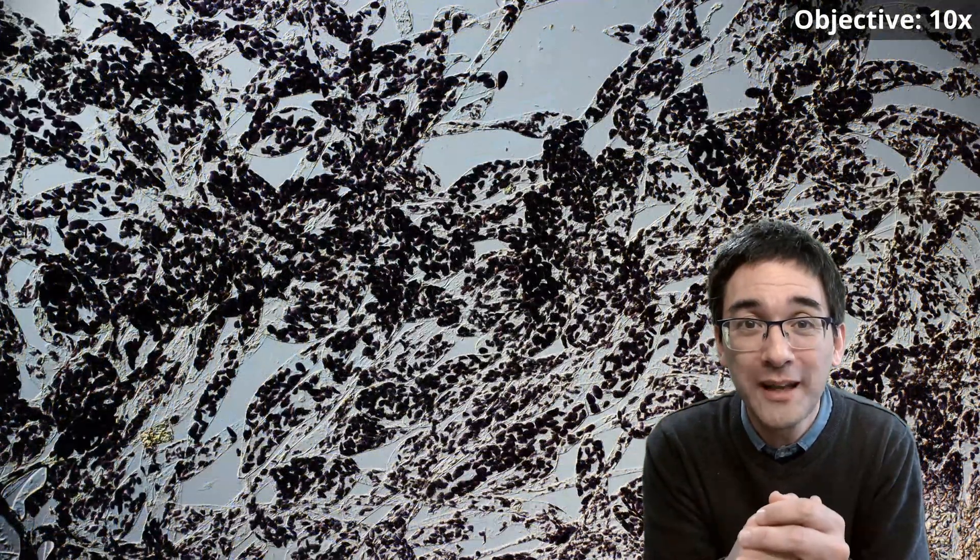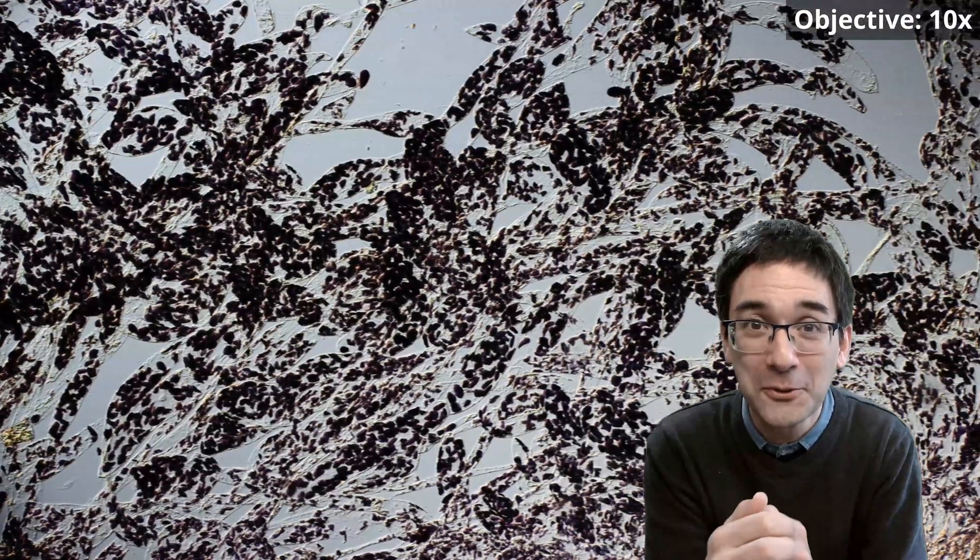And the result is much better now. All of those dots that you see now are the individual starch granules. So you see there are lots of them here, and this basically explains why bananas give us so much energy, because they're loaded with starch, just like potatoes.